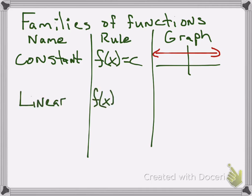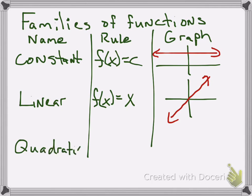Next is linear. f of x equals x by itself. Well, that one's that line like that I said. After that, we have quadratic. f of x equals x squared, which is the parabola graph, the one that has a u-shaped graph.